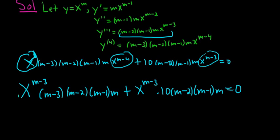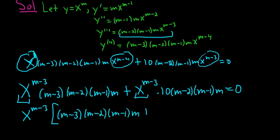Now we can factor out x to the m minus 3. So we have x to the m minus 3. And then we have m minus 3, m minus 2, m minus 1, m plus, and then 10, m minus 2, m minus 1, m bracket, and that's equal to 0.